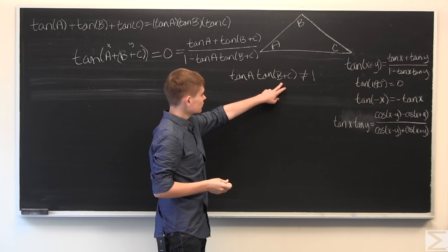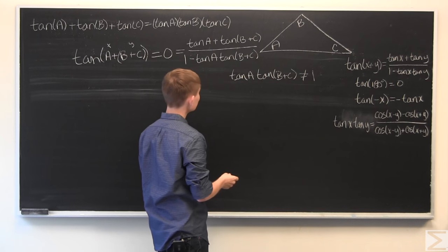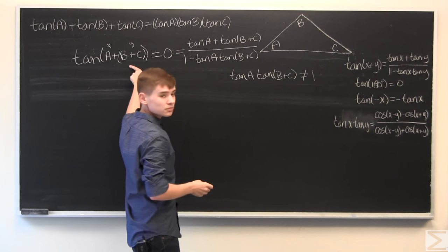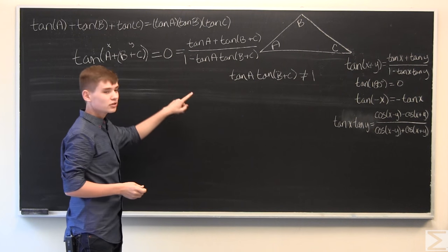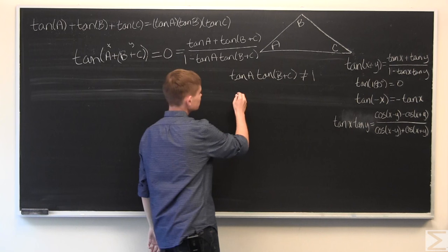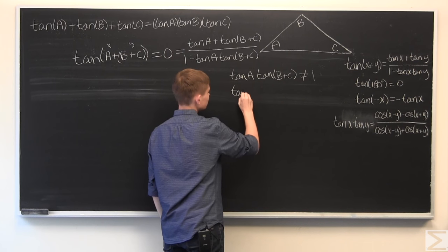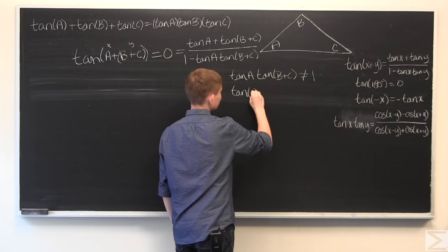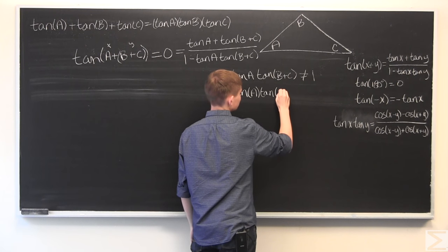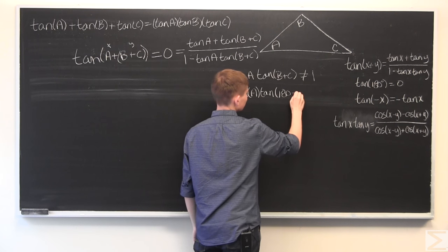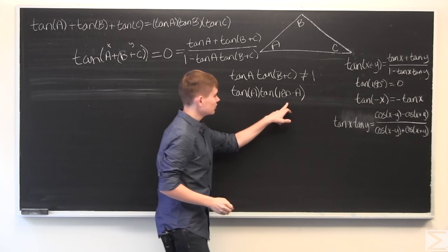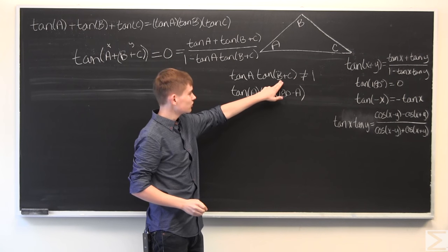And, to do this, we are going to use the fact that A plus B plus C is equal to 180, which means that we can rewrite this as tangent of A times tangent of 180 minus A.